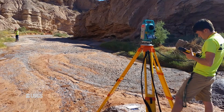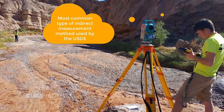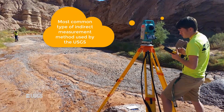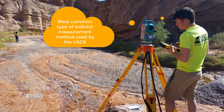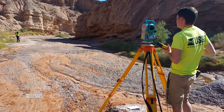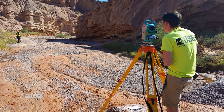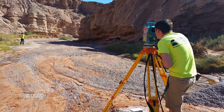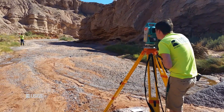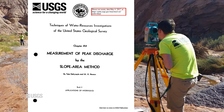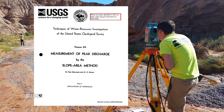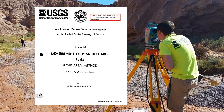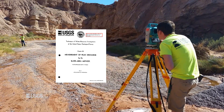Slope area measurements are the most common type of indirect measurement method used by the USGS. Generally, if you hear someone say that they were out running indirects, they were likely referring to the slope area method. You can find more information on this topic in TWRI 3-A2, Measurement of Peak Discharge by the Slope Area Method.